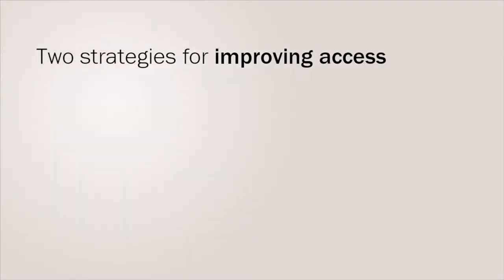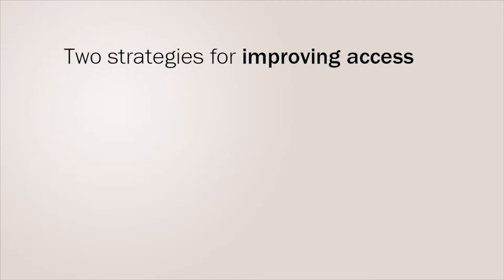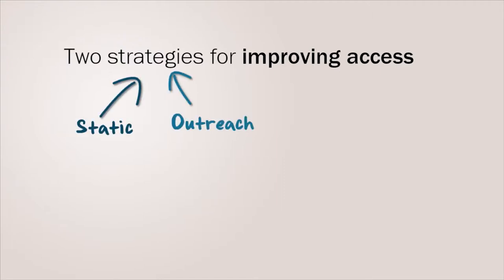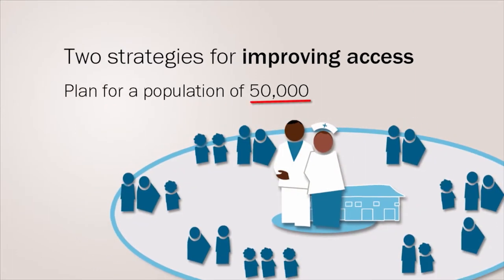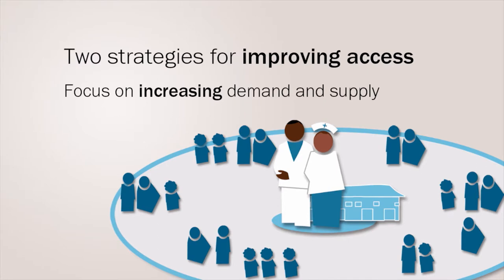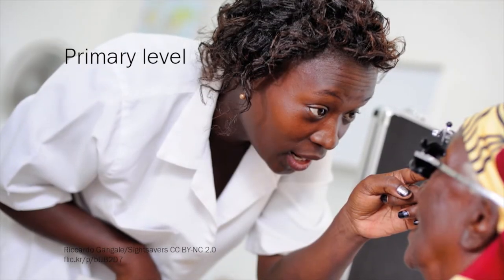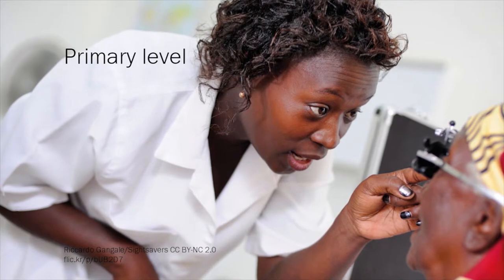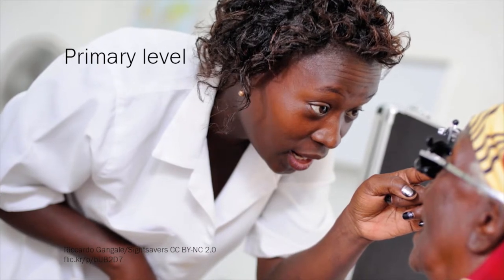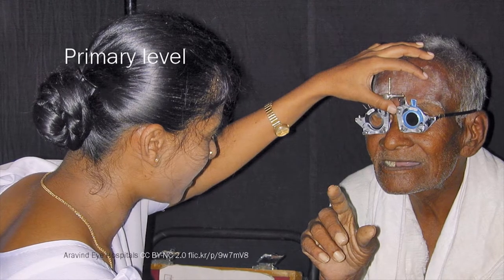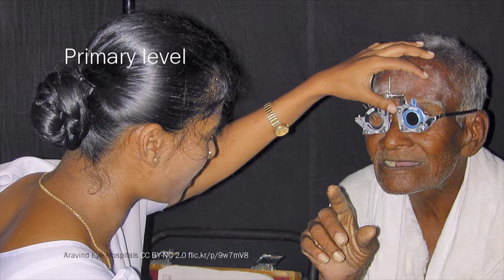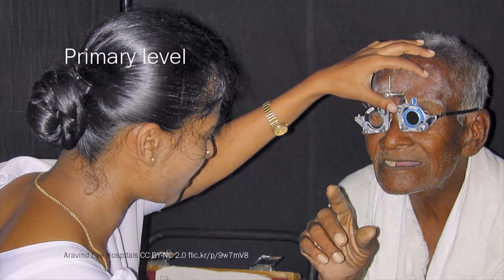There are two strategies for improving access to comprehensive community-based eye care: static and outreach. Ideally, services are planned for a population of 50,000, focusing on increasing demand and supply. At a primary level, ophthalmic assistants or nurses can be trained to perform eye examinations and refraction. To minimise referrals, they can also be trained to dispense spectacles directly.